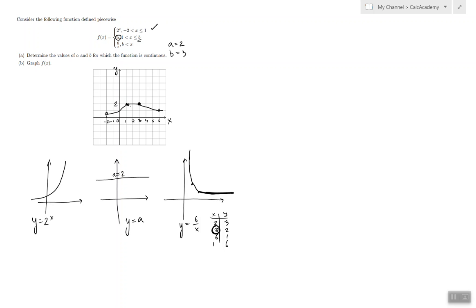So, that means by setting a equals 2, b equals 3, we can make this function continuous.